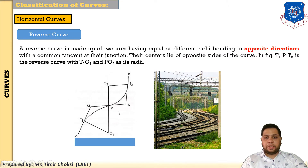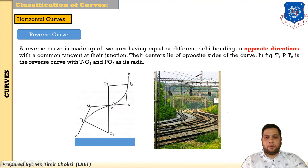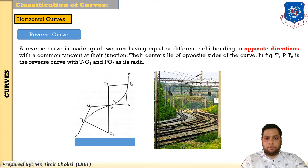The third is a reverse curve. Reverse curves are most importantly used in railway construction. A reverse curve is made of two arcs having equal or different radii, bending in opposite directions, with a common tangent. The centers lie on the opposite sides of the curve. In the figure, T1, P, and T2 form the reverse curve, with radii T1O1 and PO2. So arcs with equal or different radii in opposite directions but with a common tangent form the reverse curve.